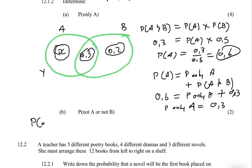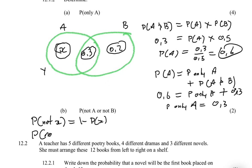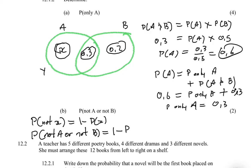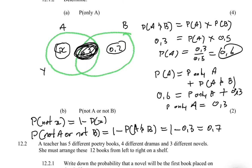The probability of not A or not B equals 1 minus the probability of A and B. We know P(A and B) = 0.3, so: 1 − 0.3 = 0.7. Therefore the probability of not A or not B is 0.7.